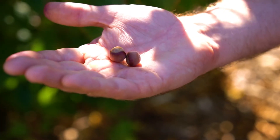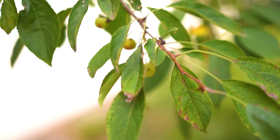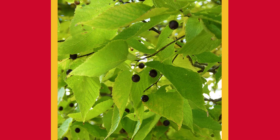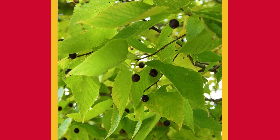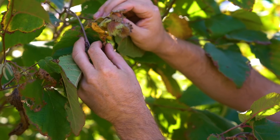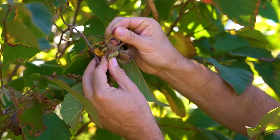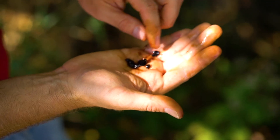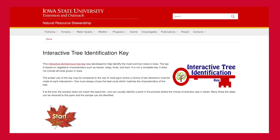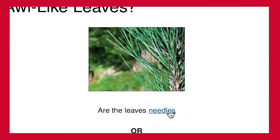And here's a final ID tip: be careful, as tree common names often inaccurately describe their actual fruit. A great example of this is Hackberry, whose fruit is not a berry at all, but is in fact a drupe. Thank you for taking the time to learn how to identify trees through their fruit. Further hone your skills using our online interactive tree identification key, which can be found on our website.